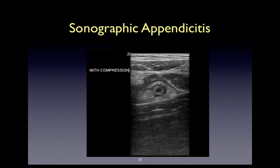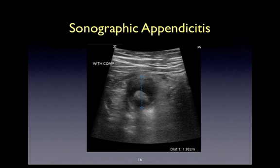Here's another beautiful example of appendicitis. In addition to having a targetoid structure, there's this plump peri-appendiceal fat surrounding the appendix. What the sonographer is also demonstrating here is that even with compression, the appendix doesn't change its shape. This will allow you to identify the appendix and distinguish it from surrounding bowel, which under the effect of pressure will actually collapse upon itself. The appendix, even with pressure applied, will maintain its targetoid structure.